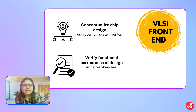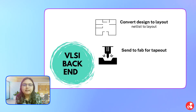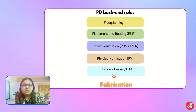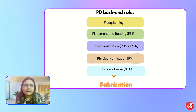Once the front-end guys are done creating the architecture, creating the functional design overview using HDL languages, and simulating and checking the functional correctness of the design, then back-end comes into the picture. Our job as a physical design engineer is to convert that functional design from the netlist level to the final layout level, which will be sent to the fab—like TSMC—for actual chip fabrication.